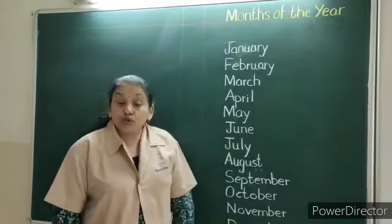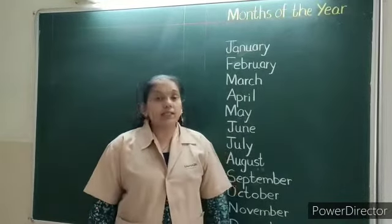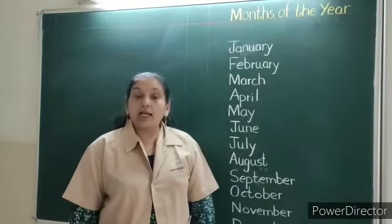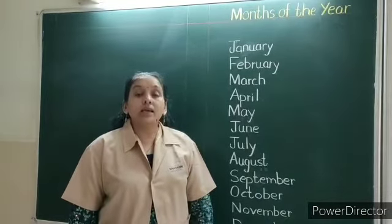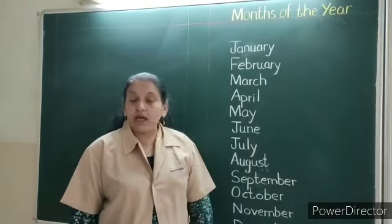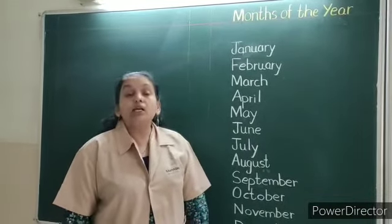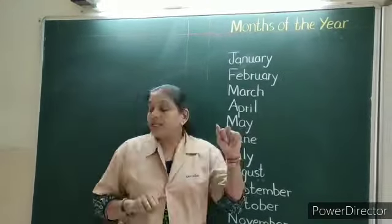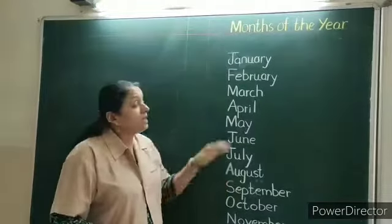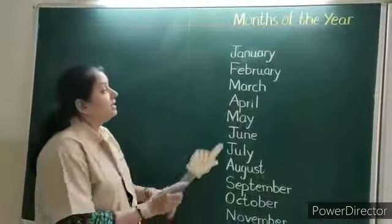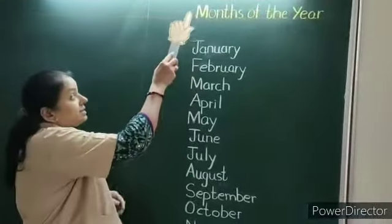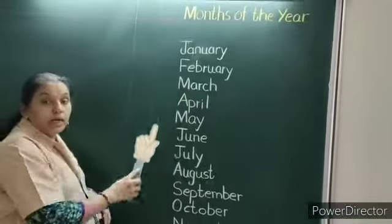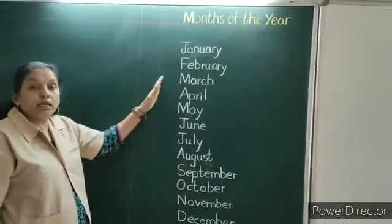So do you know children how many months are there in a year? There are 12 months in a year. How many months children? 12 months in a year. Shall we read it from the board children? Teacher has written all the names of the months on the blackboard.